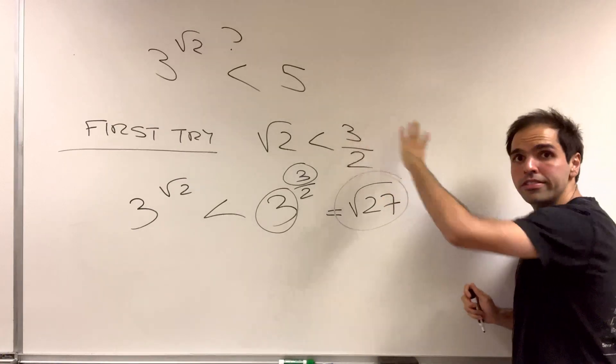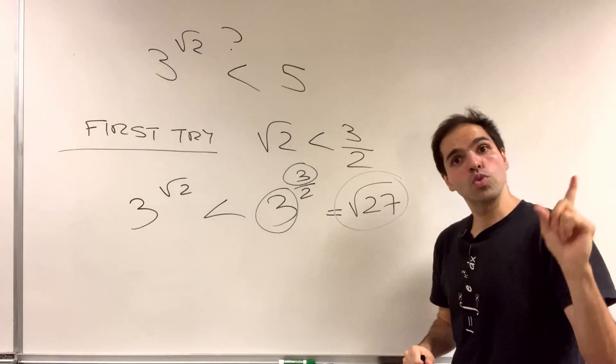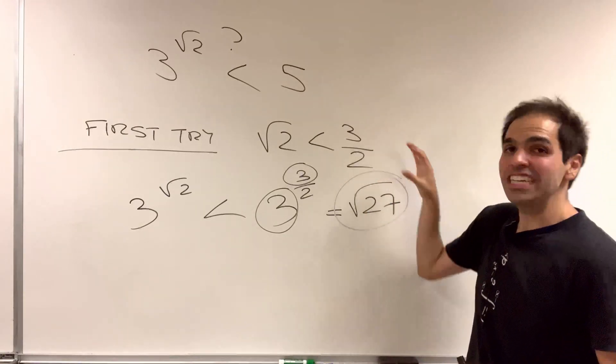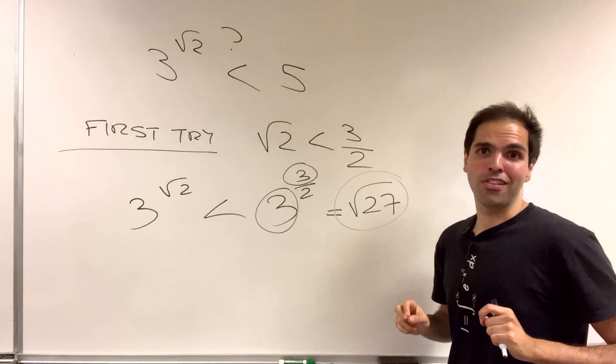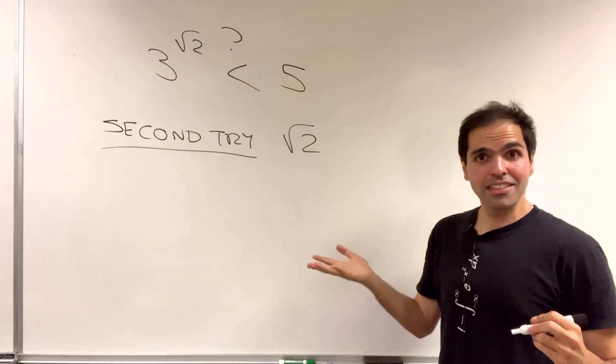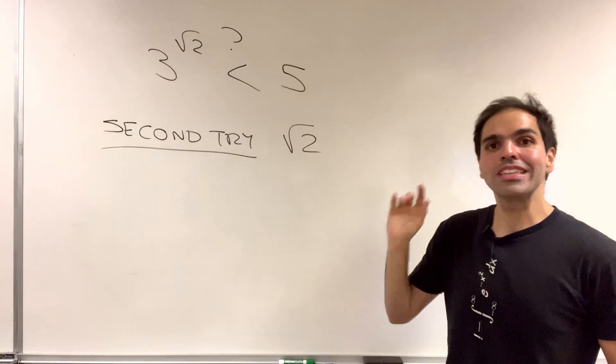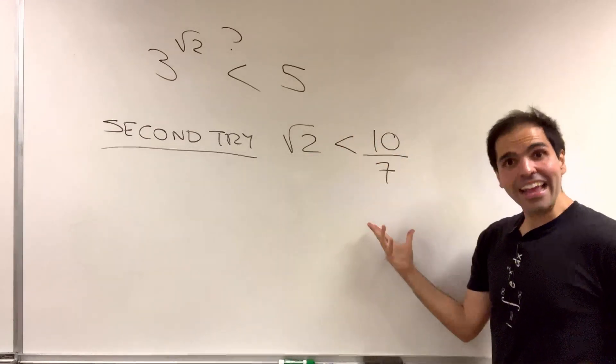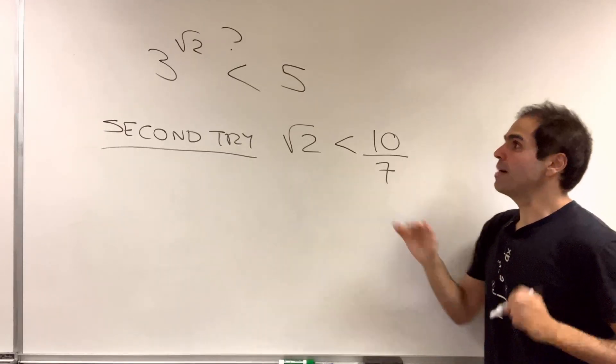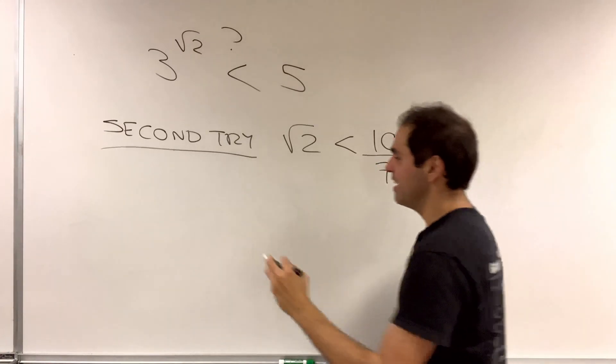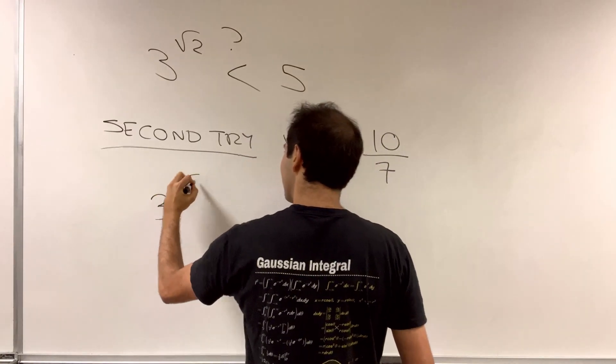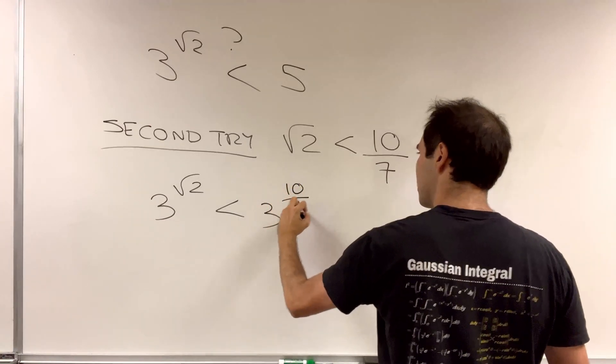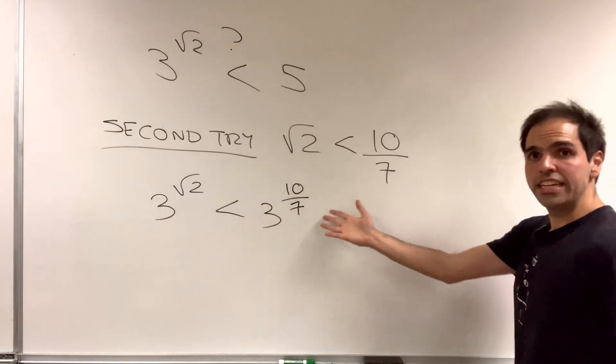So it turns out our first guess was too coarse, and so let's refine it a little bit by considering a slightly smaller fraction. Well, 3 halves didn't work. Let's try out 10 sevenths, which again you can check is true by squaring both sides. And then 3 to the square root of 2 is less than 3 to the 10 sevenths.